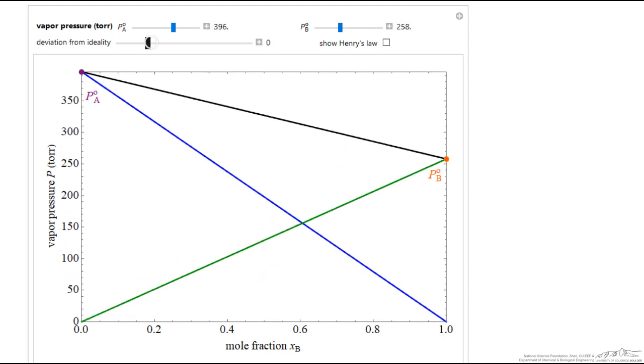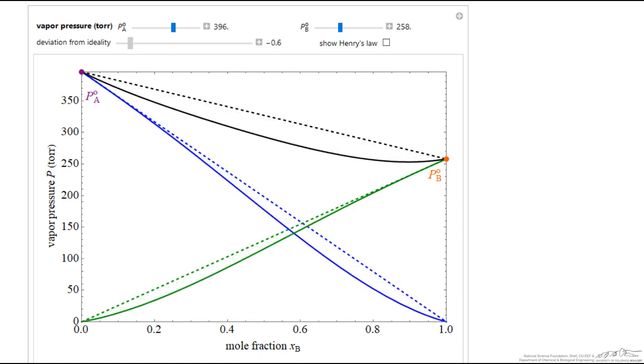We can create negative deviations from non-ideal. Now the pressure is lower - that's the real, and that's the ideal.